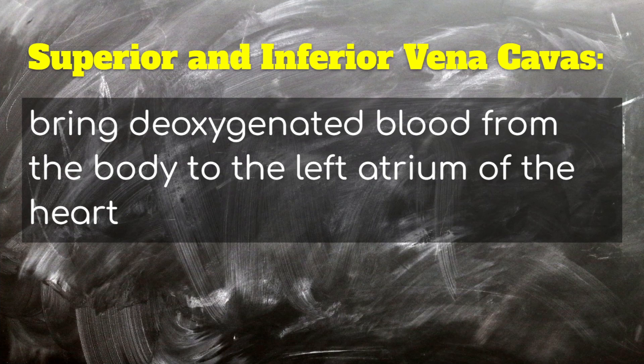Let's first talk about the superior and inferior vena cavas. These both bring deoxygenated blood from the body to the right atrium of the heart. They are both veins — that's where the 'vena' part comes from. Veins always bring blood back to the heart. They're called superior and inferior, not because one is better than the other, but because one is higher. Superior means above, inferior means below.